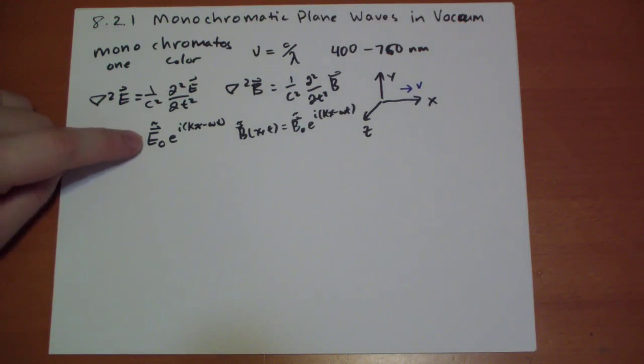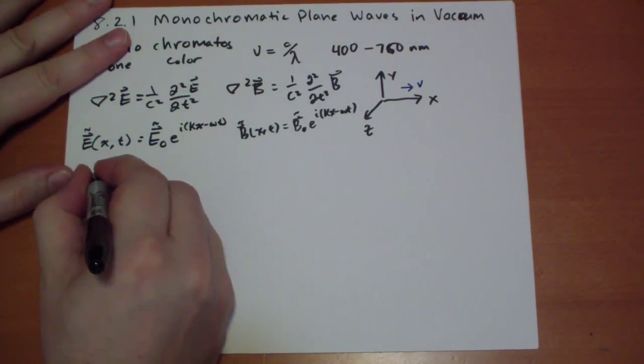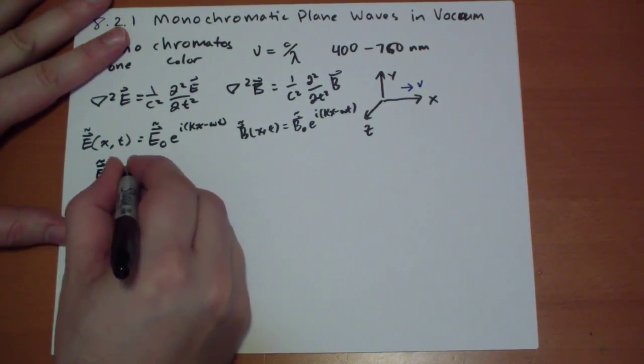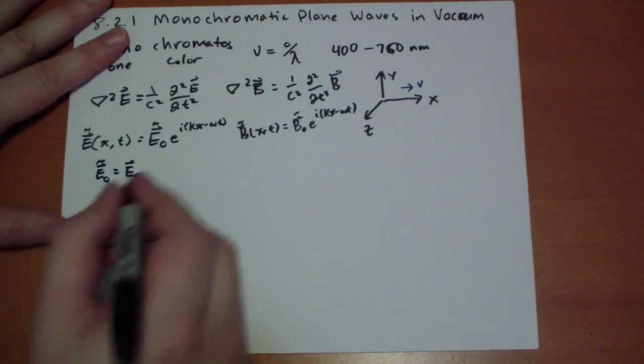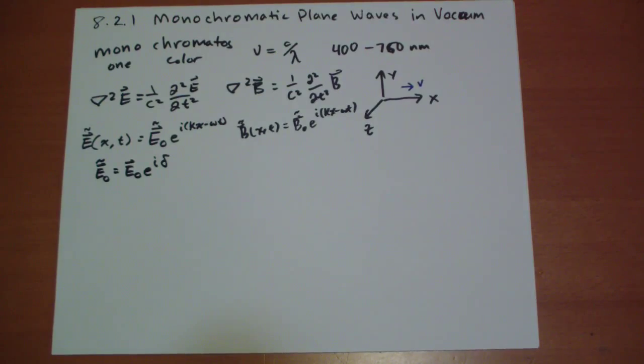Anyway, the phase constant, as you remember, is embedded within these complex numbers here. Delta. So, we can write our E naught, the complex one, is equal to some real E vector, E naught, times E to the I delta, which is the phase constant. Same for the B.